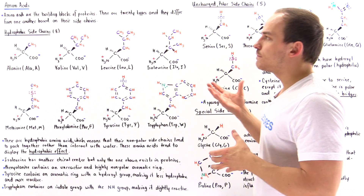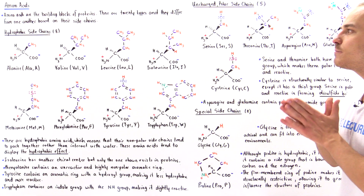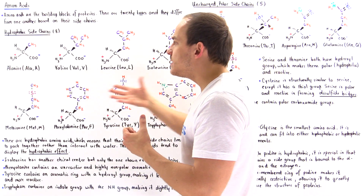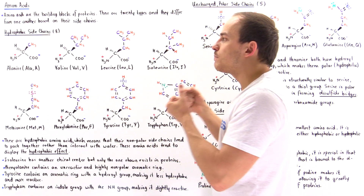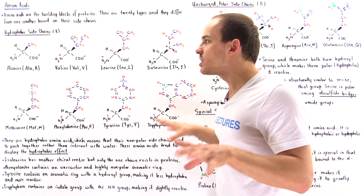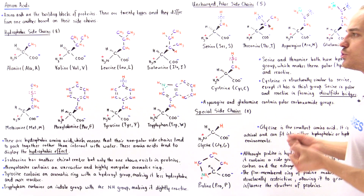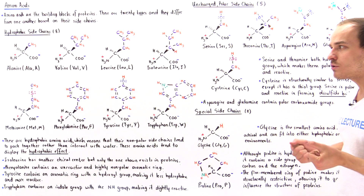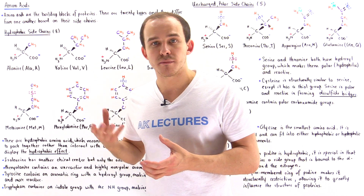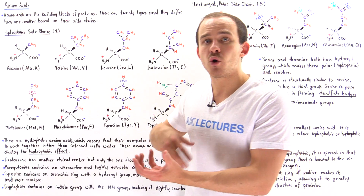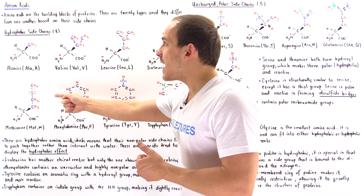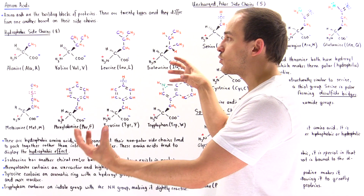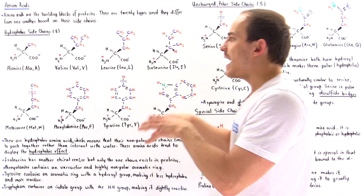These are our eight hydrophobic side chains. Because they are nonpolar, these side chain groups tend to pack together and aggregate. In the protein structure, these side chains will point inward because they will not want to interact with the polar water molecules found in solution. Inside our cells, solutions are made predominantly of polar water molecules, so these hydrophobic amino acids display the hydrophobic effect, creating a packed structure found inside the protein rather than on the outside.